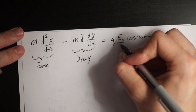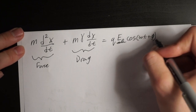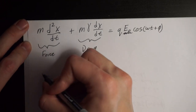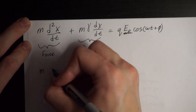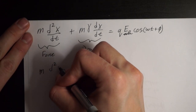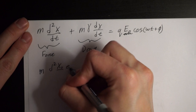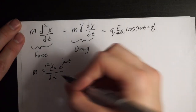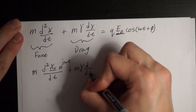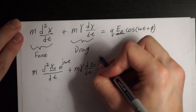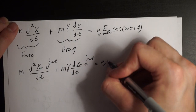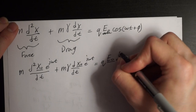The electric field is E-naught cos(ωt) plus some phase shift. The first step is to convert all of these into phasor form. We get mass times the second derivative of displacement in phasor form: x-naught phasor e^(jωt) over dt, plus mass times gamma times the first derivative dt of x-naught phasor e^(jωt). This equals q times E-naught phasor e^(jωt).